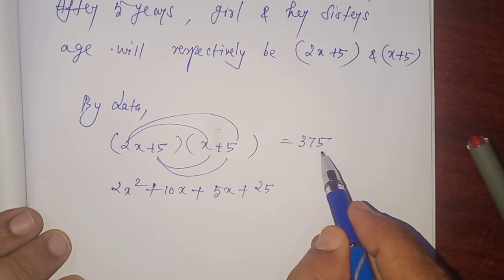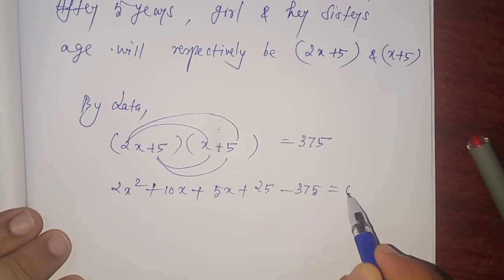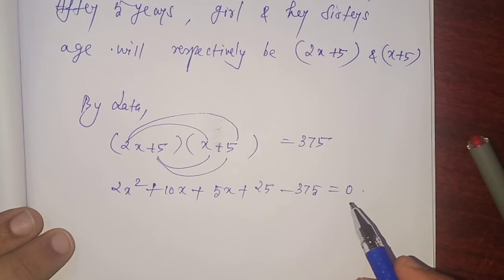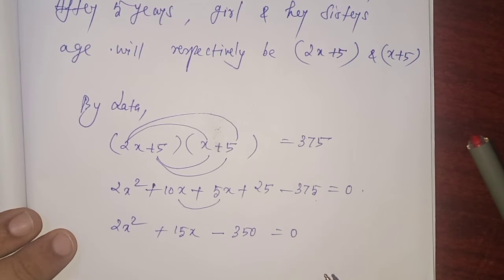Bring 375 to the left hand side. So minus 375 equals 0. 2x squared. Here, x term. It is also x term. So, like terms. 10x plus 5x that is 15x. 25 minus 375 that is minus 350 equals 0.